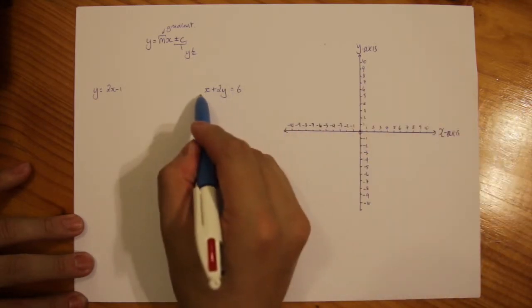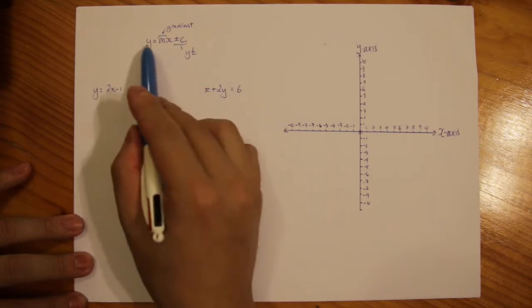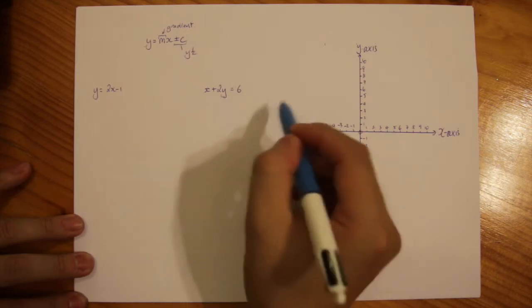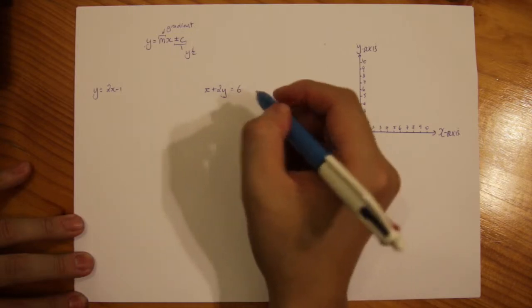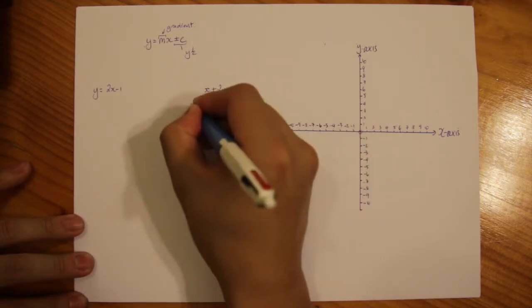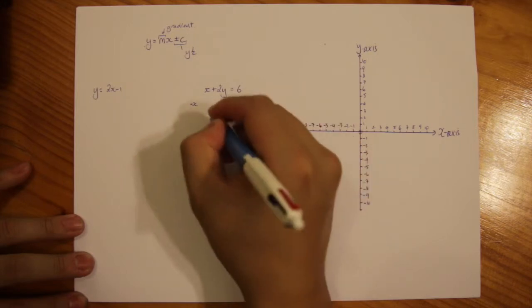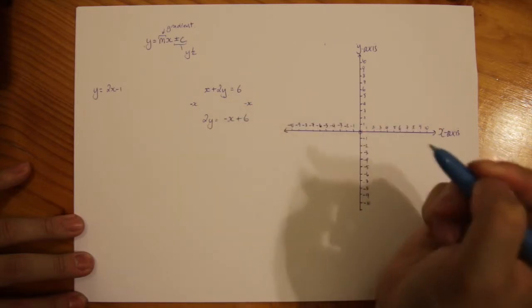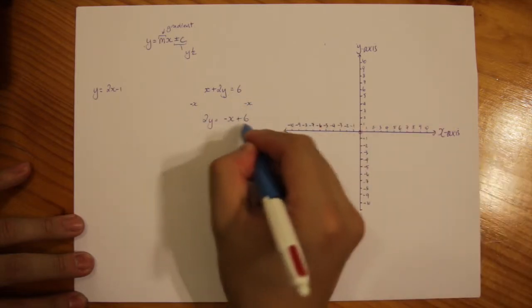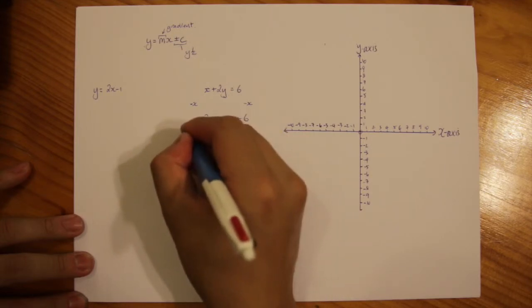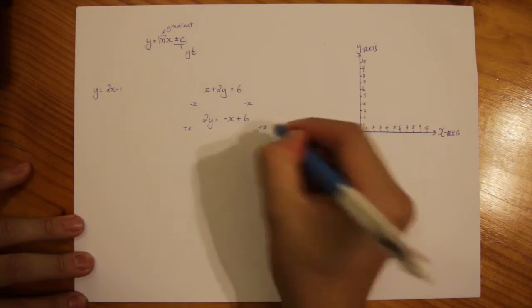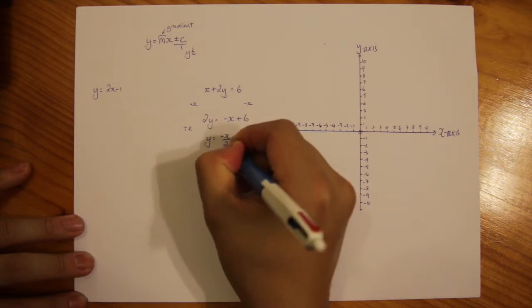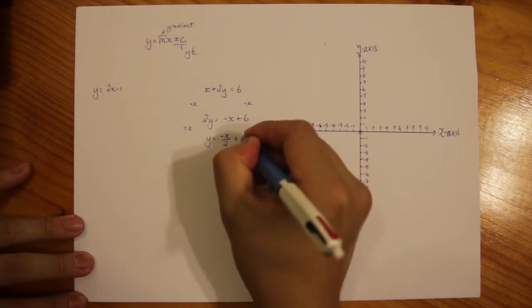Notice that this equation here does not fit the format of y equals mx plus or minus c. I need to isolate y first to fit this format, so let's do that. I'm going to subtract x from both sides, so I have 2y equals negative x plus 6 and then I'm going to divide both sides by 2. So I have y equals negative x over 2 plus 3.